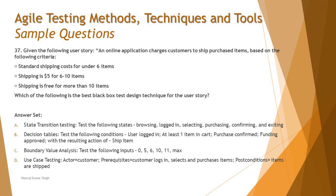Question 37 says: given the following user story, an online application charges customers to ship purchased items based on the following criteria. Standard shipping cost: for under six items, shipping is $5; for six to ten items, shipping is free for more than ten items. It clearly says there are different criteria based on the number of items — standard cost for under six, $5 for six to ten, and free shipping for more than ten.